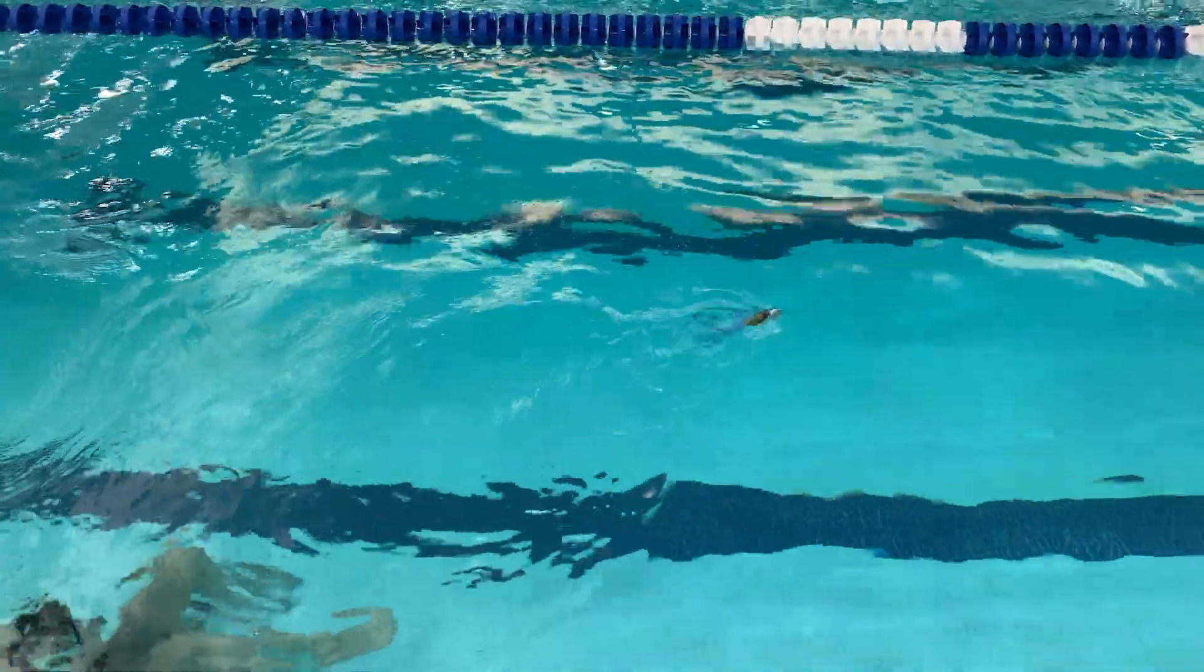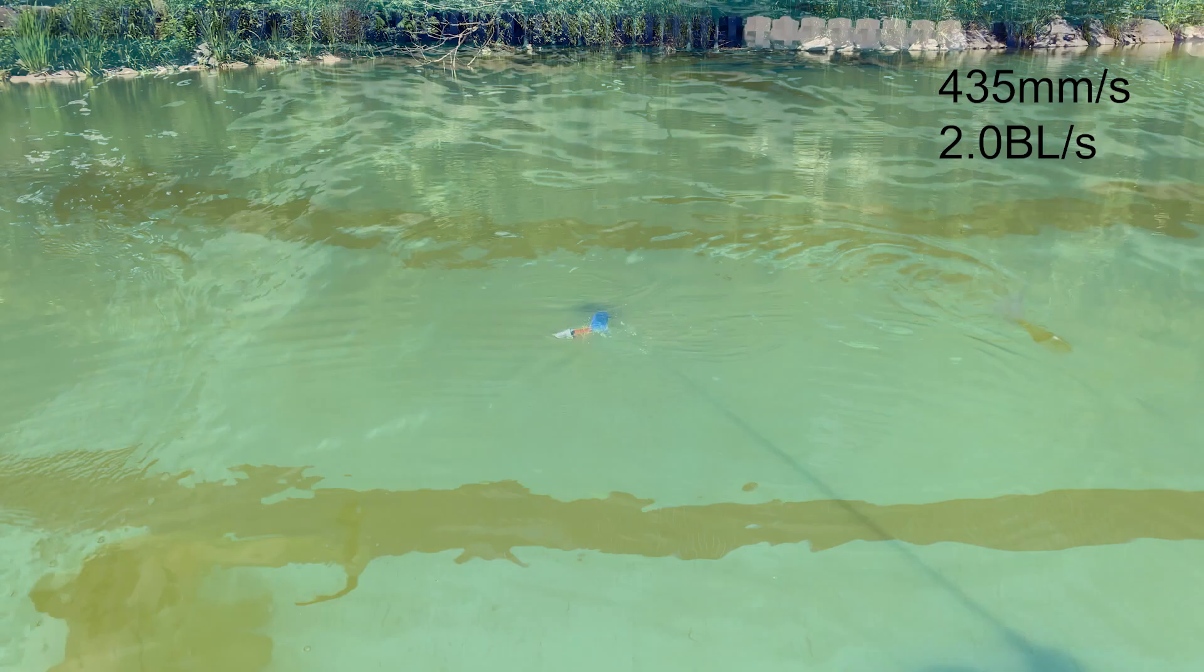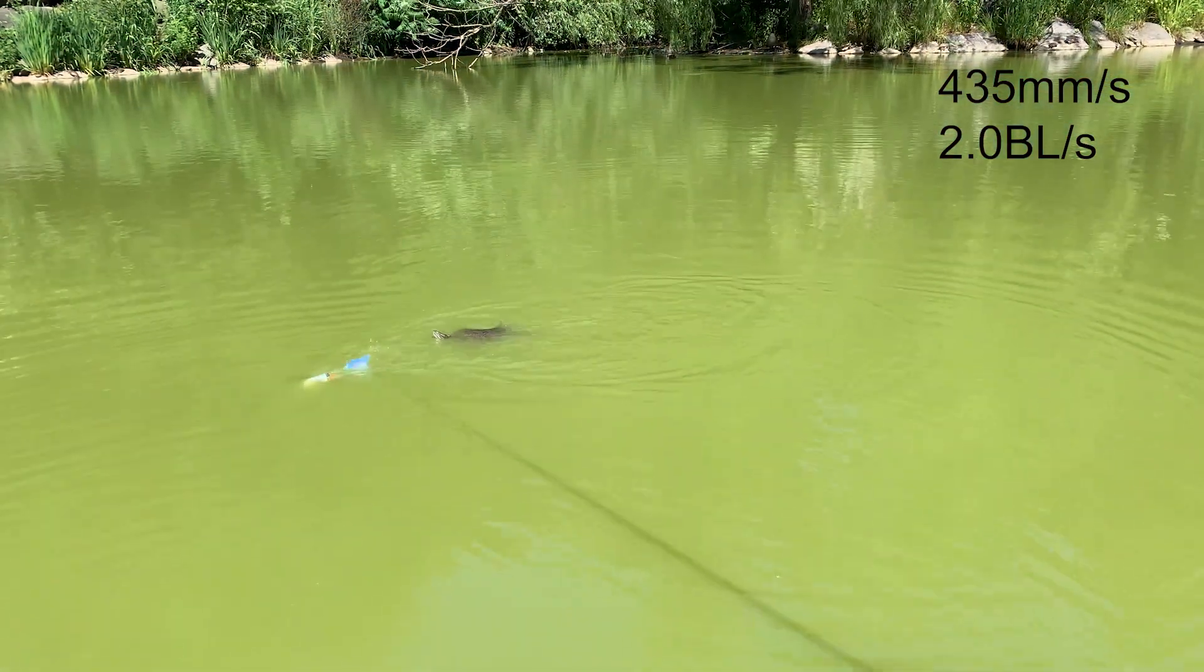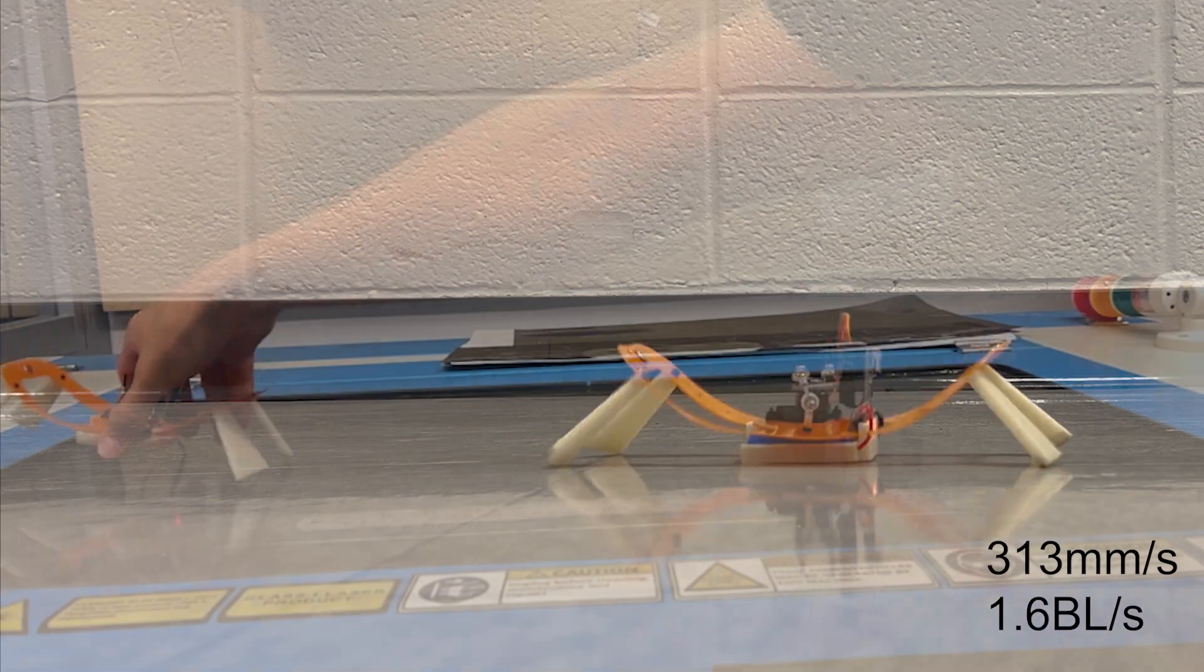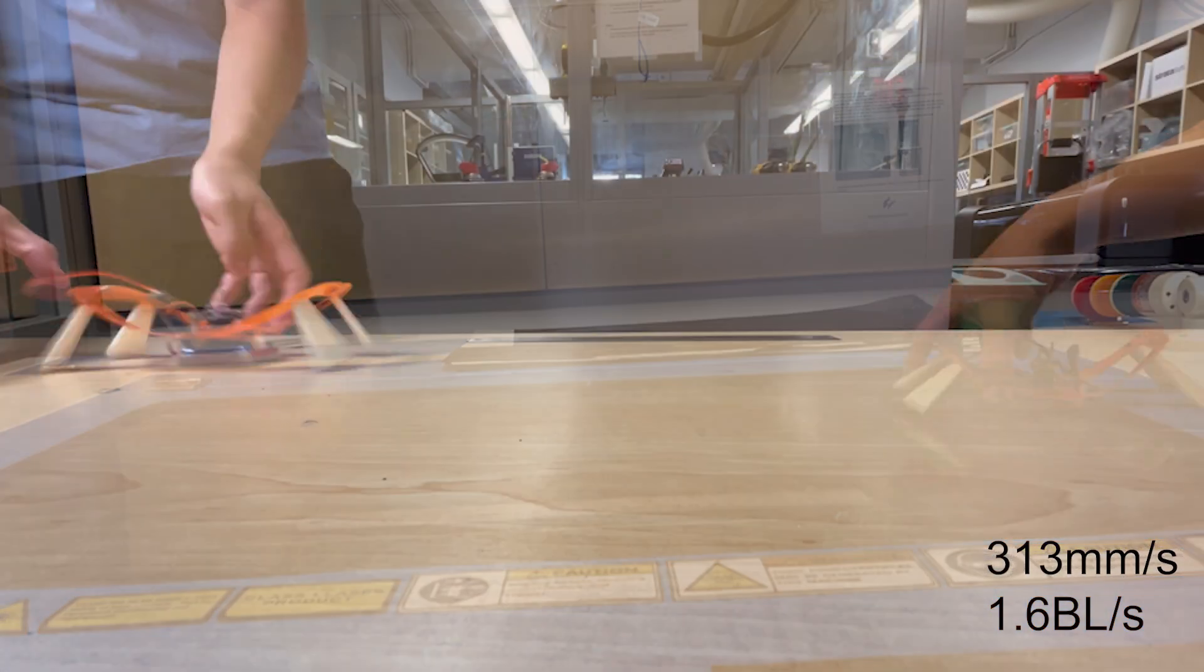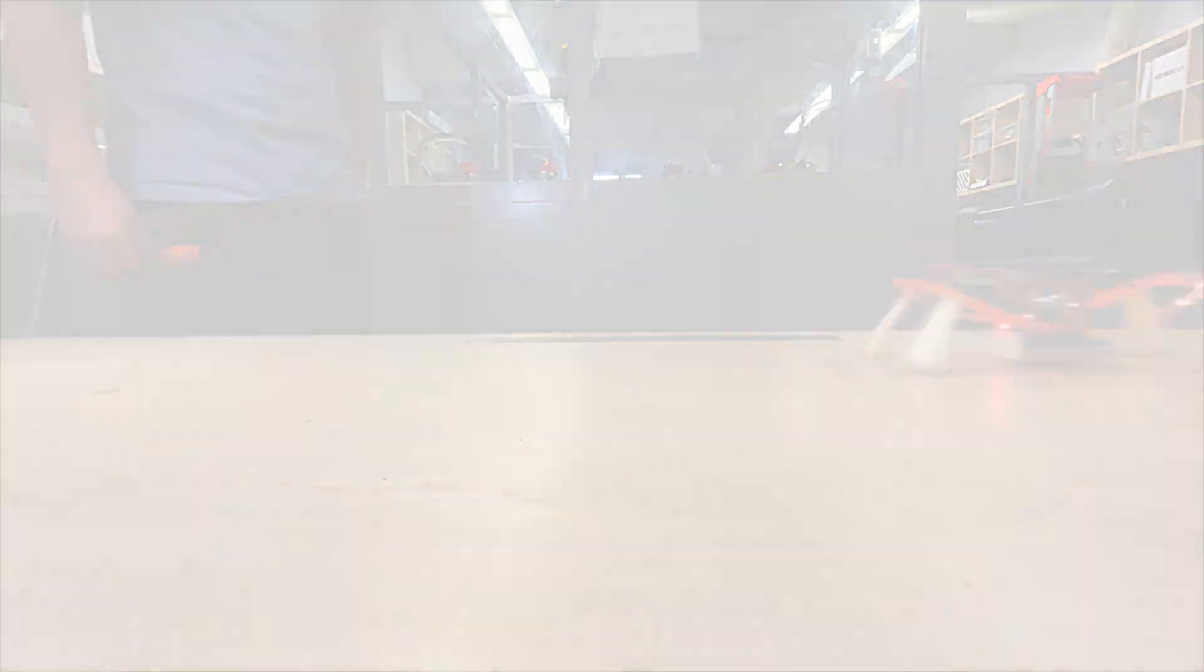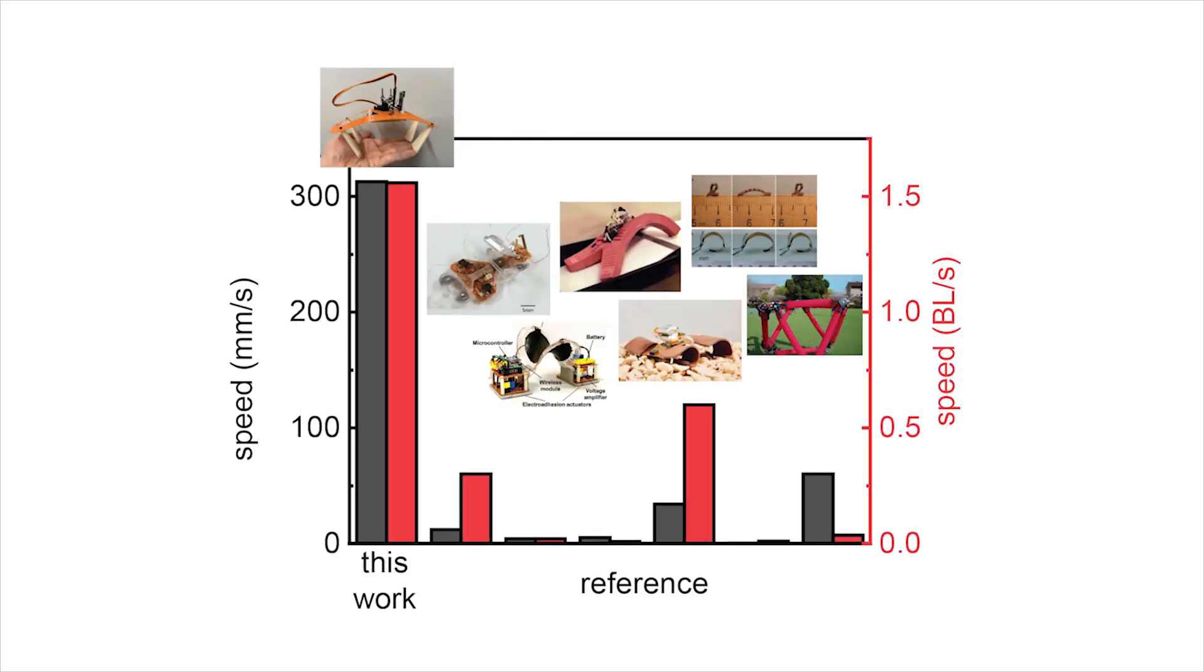The fish is found to swim at a speed of 435mm or 2.0 body lengths per second, and the crawler gallops at 313mm or 1.6 body lengths per second. Both of them break the highest speed recorded.